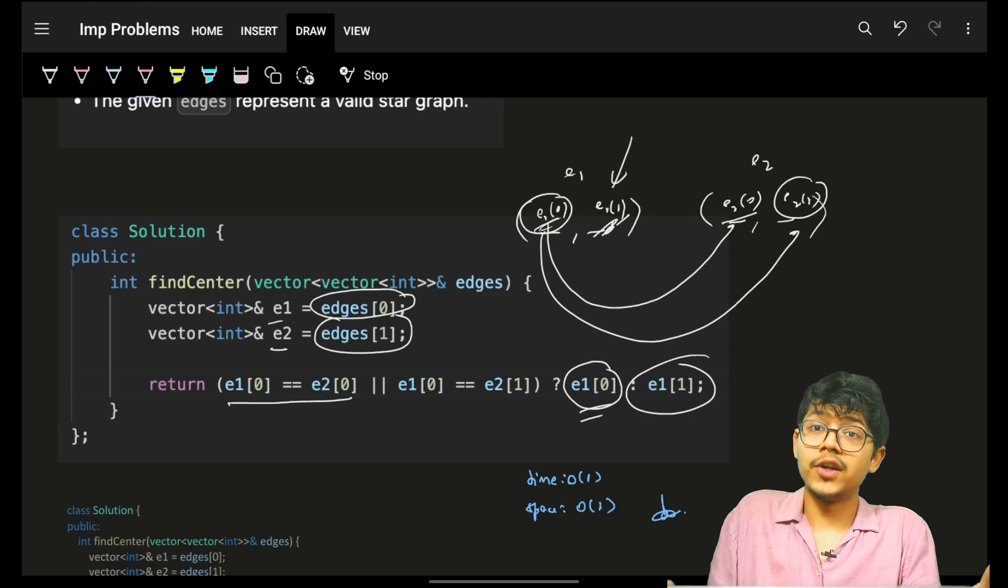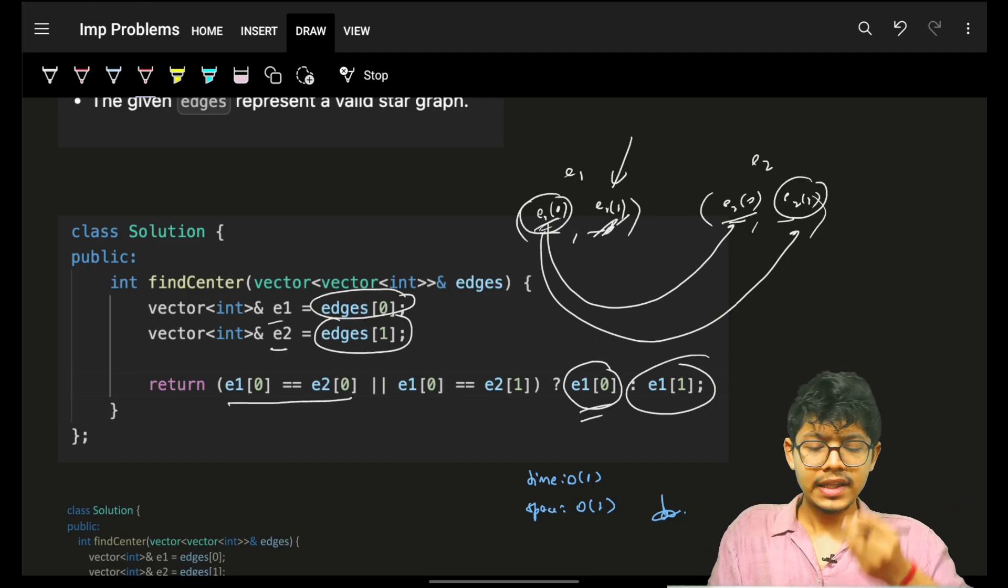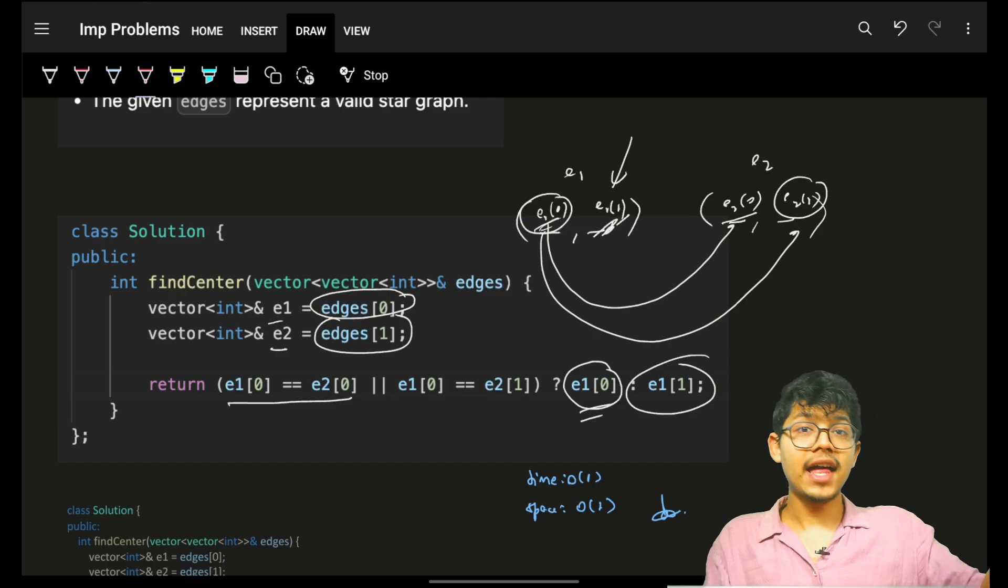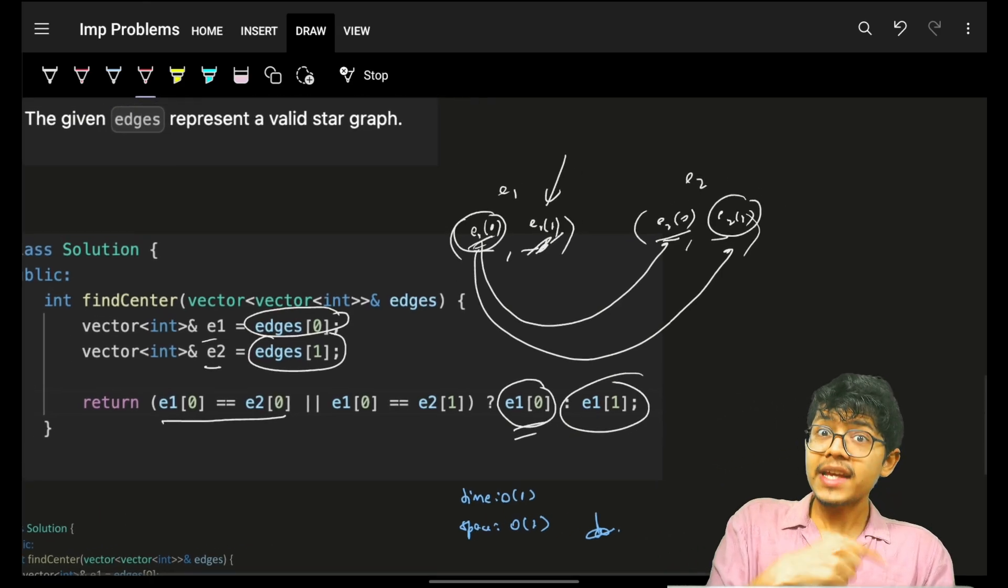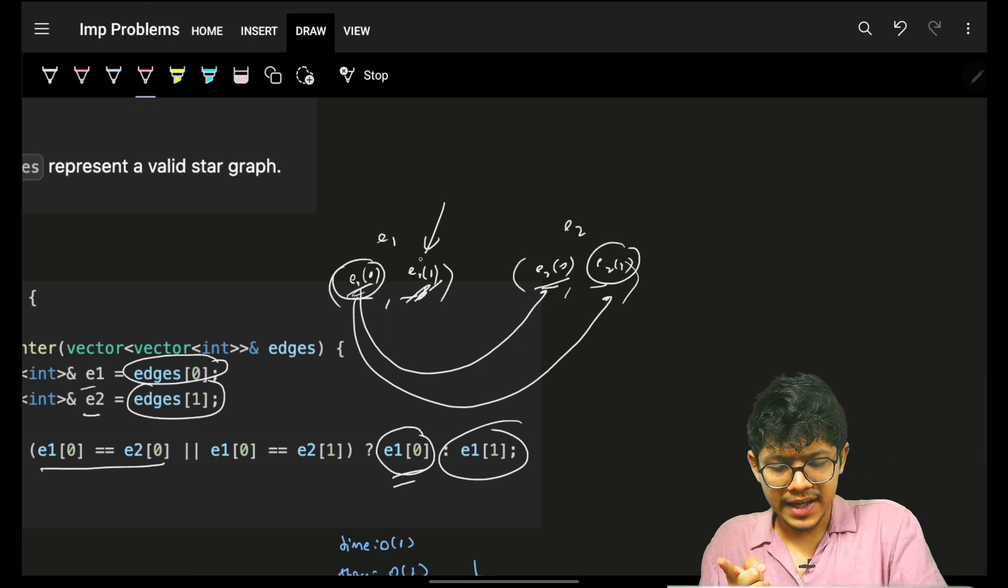This is the problem: I am saying, what if I don't know there's a star graph or not? Then I have to go and iterate on the entire array and see if it is actually following that star graph property or not.